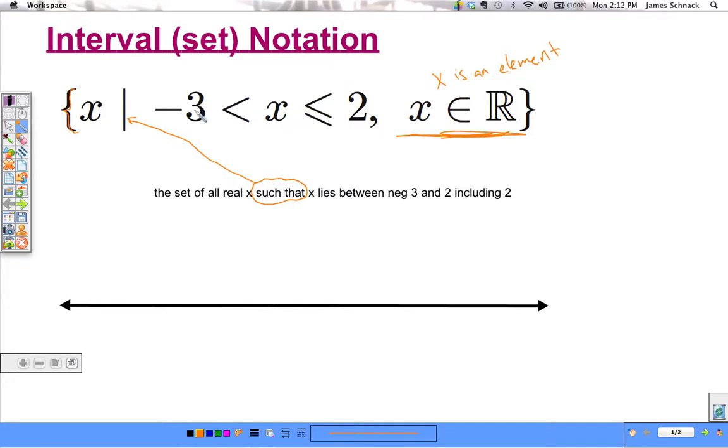Then we have this inequality. x is between negative 3 and 2 including the 2 because of the or equal to. We can show this on our number line. If that's my 0, 2 would be out here, negative 3 down there. We use an open circle at 3 because we're not including 3. We use a closed circle on 2 because we are including 2, and then we shade in between these. That shaded region represents all of the values of x that satisfy this notation.